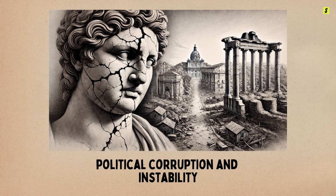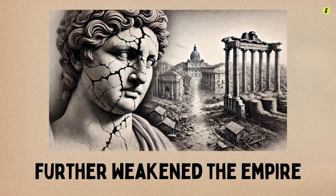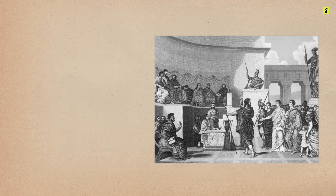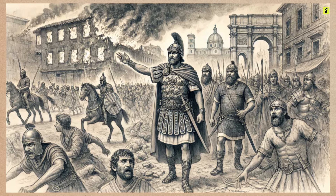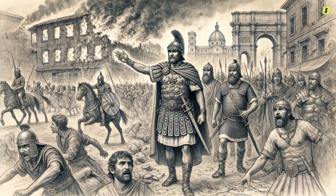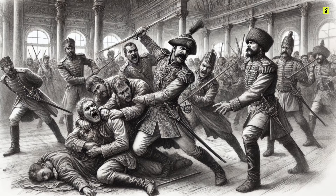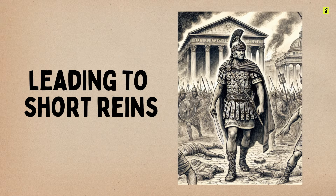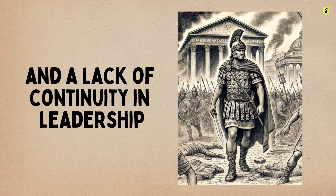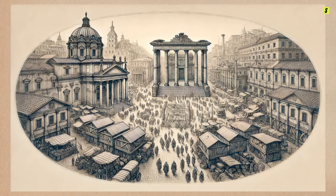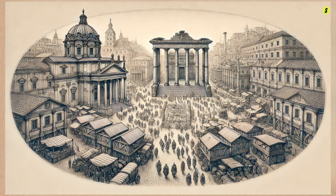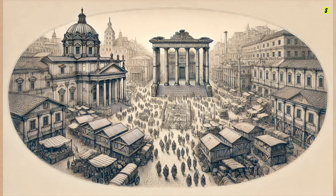Political corruption and instability further weakened the empire. The Roman political system became increasingly corrupt, with power often seized through violence rather than legitimate succession. Emperors were frequently overthrown by ambitious generals or palace coups, leading to short reigns and a lack of continuity in leadership. This constant power struggle eroded the authority of the central government and led to a loss of public trust in the leadership.